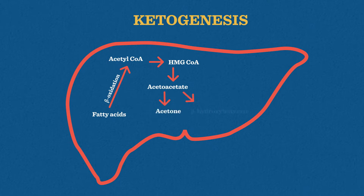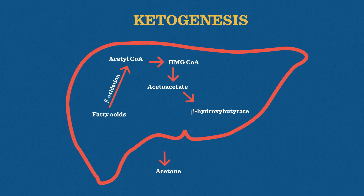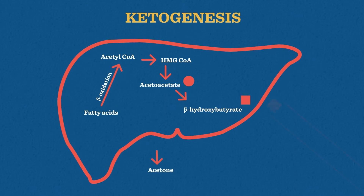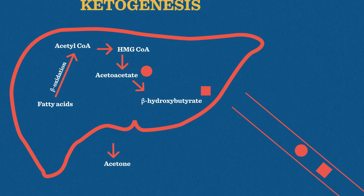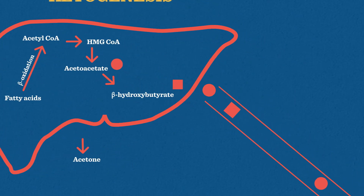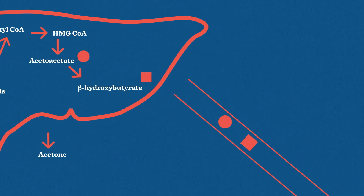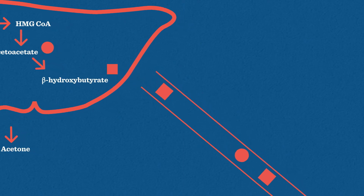Acetoacetate then produces the two other ketone bodies: acetone and beta-hydroxybutyrate. The body cannot metabolize acetone, so it is expelled via the breath. The two remaining ketones, acetoacetate and beta-hydroxybutyrate, then leave the liver and are transported via the blood to other tissues throughout the body.